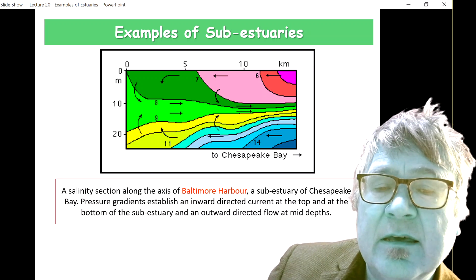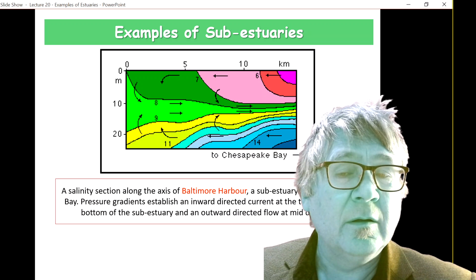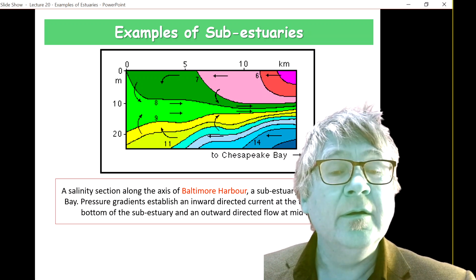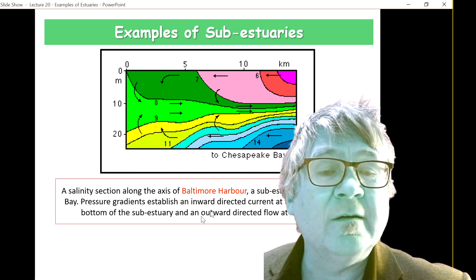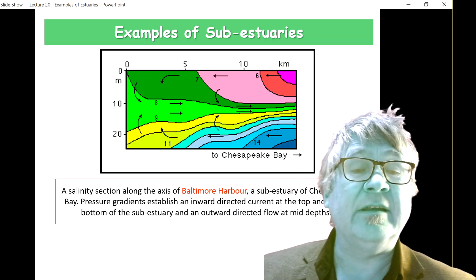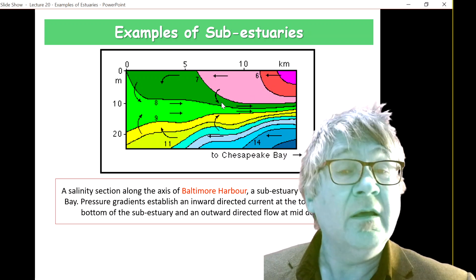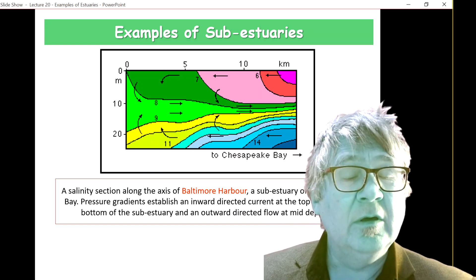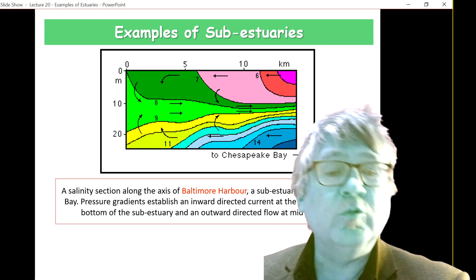Shown here is the salinity section — only about 15 kilometers long and 25 meters deep in this sub-estuary. Here you can see a rather complex flow structure, where water actually flows into the sub-estuary near the surface and near the bottom, with a return flow in between. Very complex flow structures exist in sub-estuaries, so don't think it's easier — sub-estuaries can have these weird, weird flows.